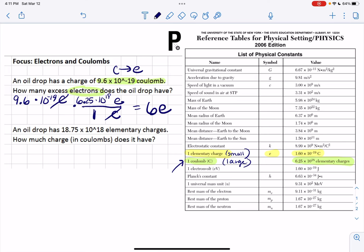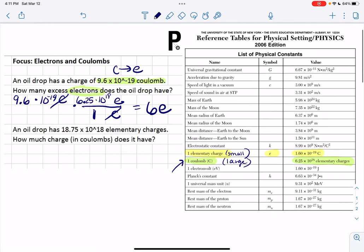You could put 1 elementary charge is the same thing as 1.6 times 10 to the negative 19 in the denominator. The only thing is then you would have to put parentheses around the whole thing when you divide. But you can do it either way.